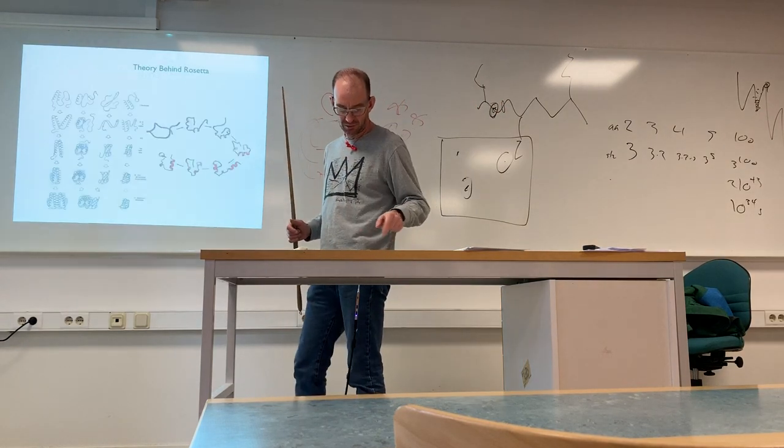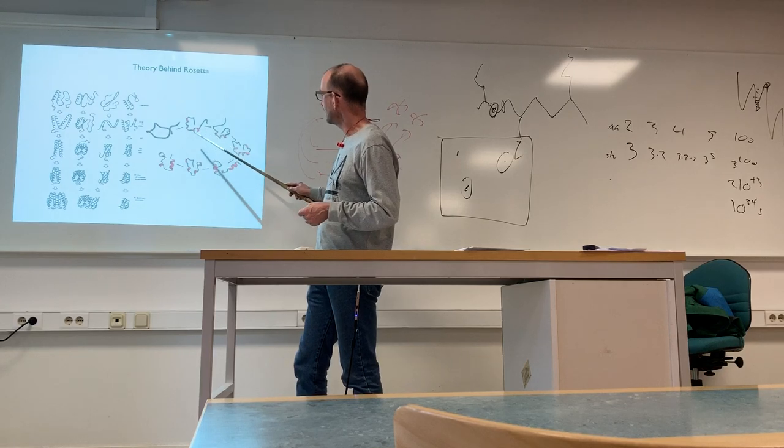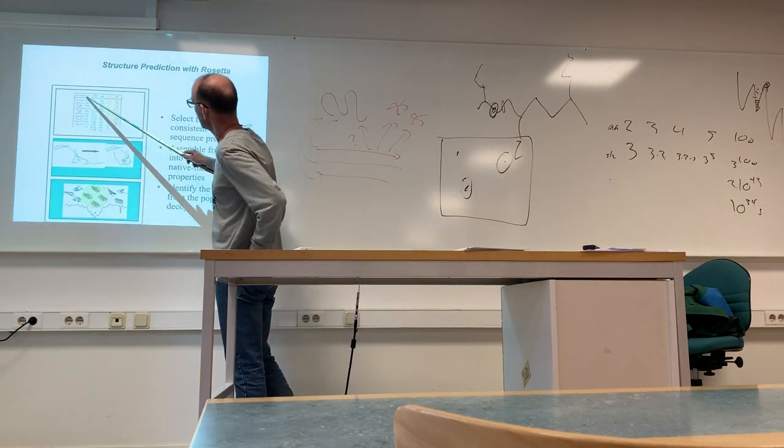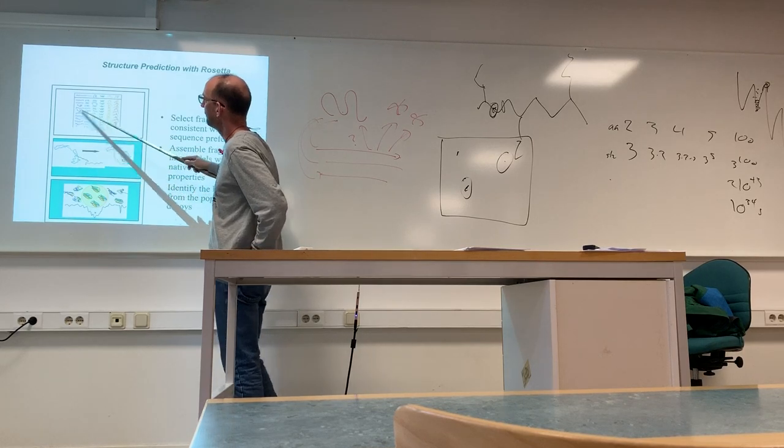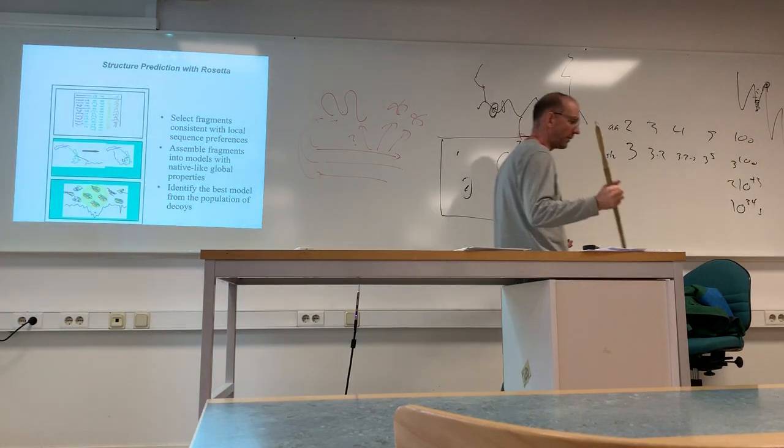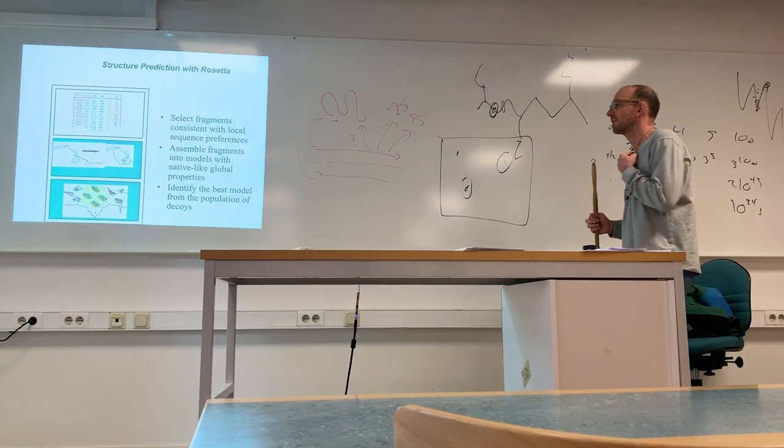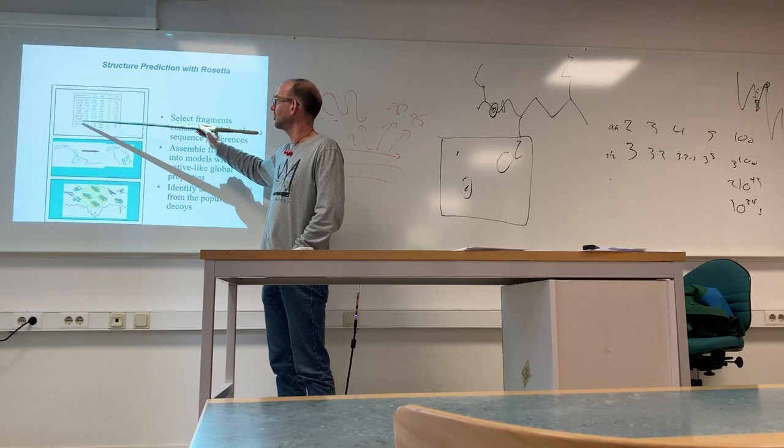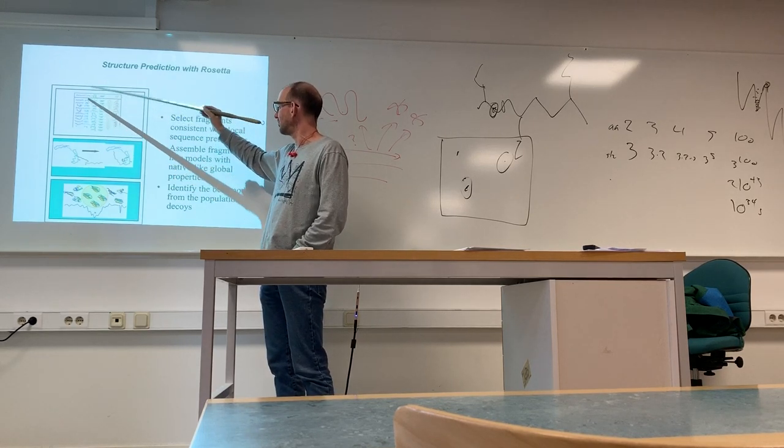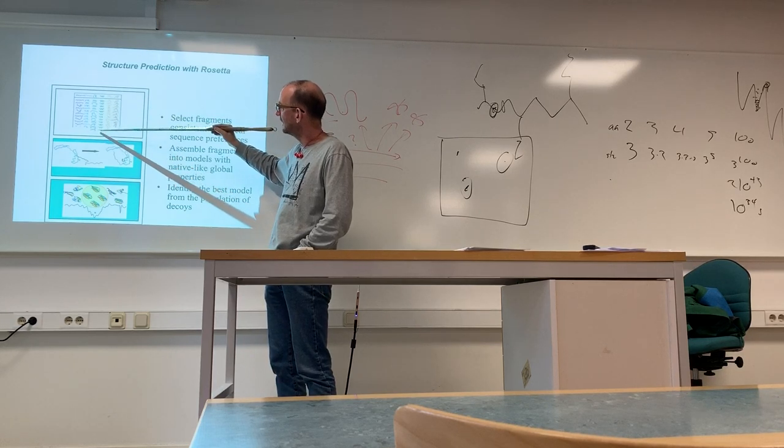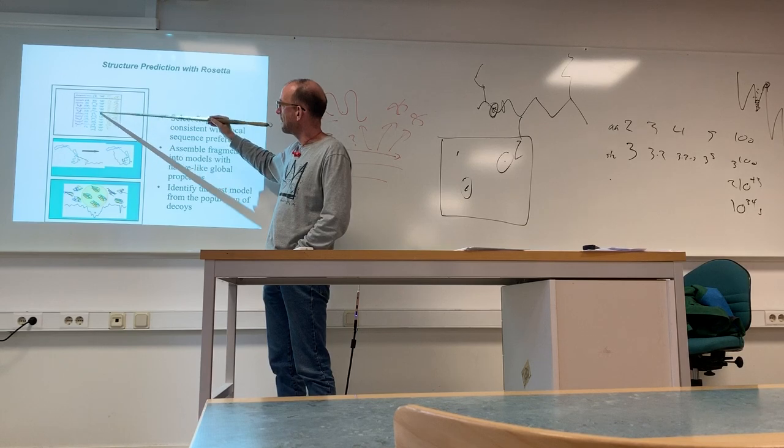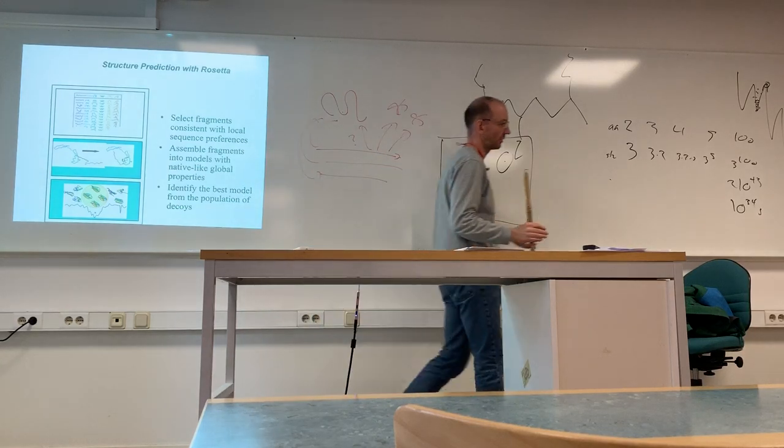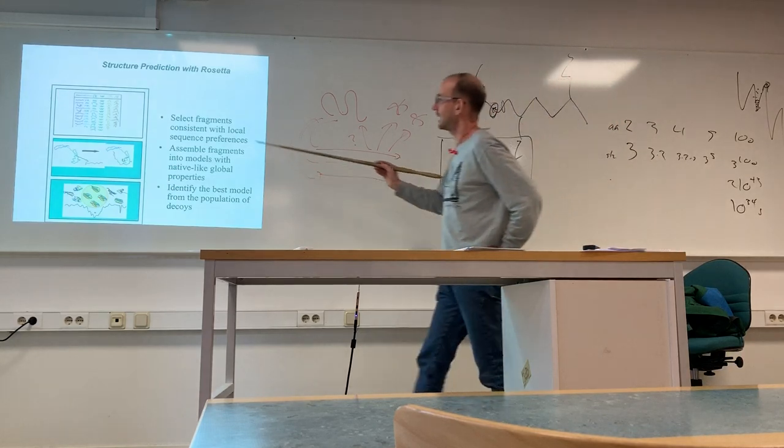The trick to separate them is to use fragments. So for each piece of sequence, you look for potential conformations by searching for other sequences that have similar sequence. So you get potential conformations for each fragment of normally nine or three residues.